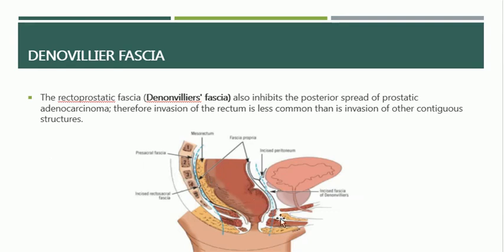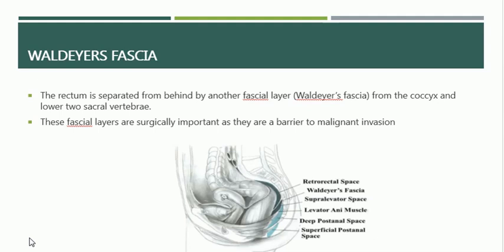Here you can see the incised fascia under this sagittal section — it is between the prostate, the urinary bladder, and behind this is the fascia of Denonvilliers. Posteriorly, there is Waldeyer's fascia — a very strong layer that separates the rectum from behind, from the coccyx and the lower two sacral vertebrae. You can see this layer — Waldeyer's fascia — which separates the rectum from the coccyx and lower two sacral vertebrae.